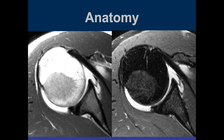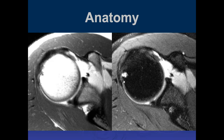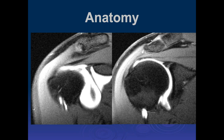We'll discuss ways to differentiate true labral tears from anatomic variants. Going superiorly, occasionally with a high superior insertion of the anterior band of the inferior glenohumeral ligament you'll see a third structure, and they all come together in the anterior superior aspect of the labrum. In the coronal plane, the middle glenohumeral ligament attaches to the deep surface of the subscapularis. The superior glenohumeral ligament, anterior superior labrum, and middle glenohumeral ligament come together here, with the anterior band of the inferior glenohumeral ligament and just posterior to this is the biceps anchor.